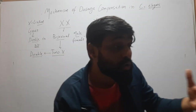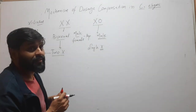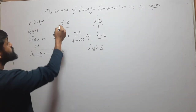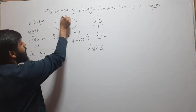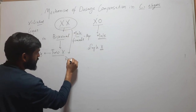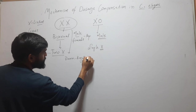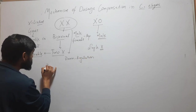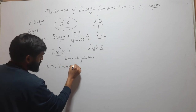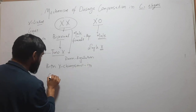But these gene doses must be equal to maintain proper dosage of genes. So how is this done? How is dosage compensation — the equalization of gene expression — achieved? This equalization is done by down-regulation of both X chromosomes in C. elegans.